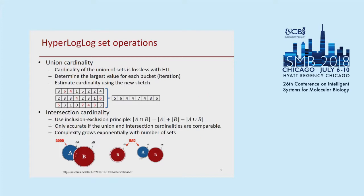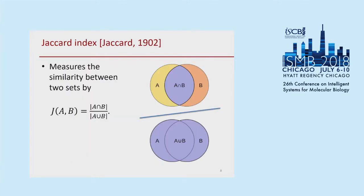Intersections are a bit harder. You can use the inclusion-exclusion principle, but the absolute estimation error is dependent on the size of the union. When the intersection is really tiny, the relative error in the intersection cardinality is pretty bad. Furthermore, the complexity grows exponentially with the number of sets, so this isn't feasible for intersections of large numbers of sets. Luckily, other sketches have been designed that are better for set intersections — in particular, the MinHash sketch, which directly estimates the Jaccard index.